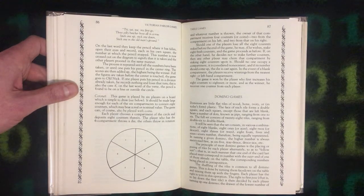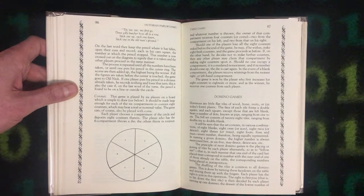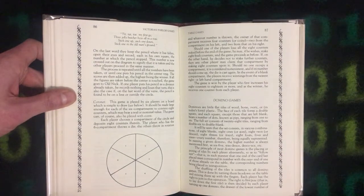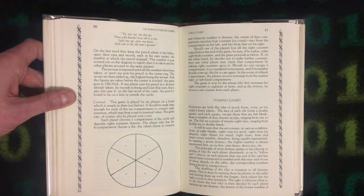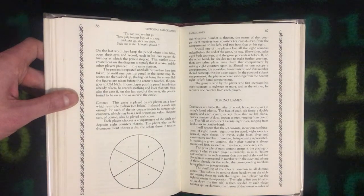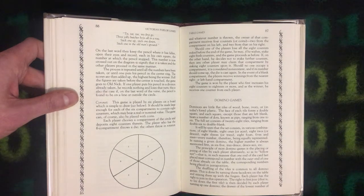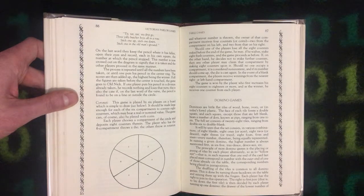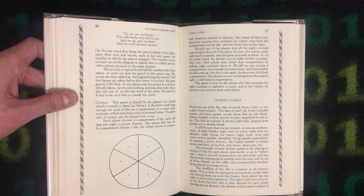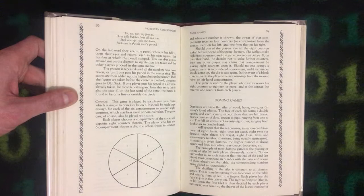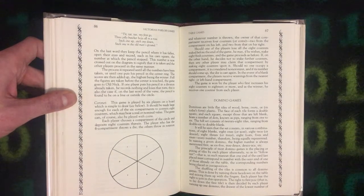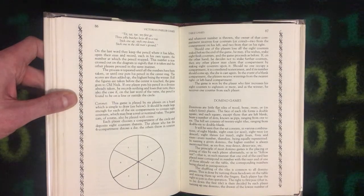The player who has the six compartment throws a die. The others throw in rotation and whatever number is thrown, the owner of that compartment receives four counters or coins, two from the compartment on his left and two from that on his right. Should one of the players lose all the eight counters staked before the end of the game, he may, if he wishes, stake eight fresh counters and the game proceeds as before. If, on the other hand, he decides not to stake further counters, then any other player may claim that compartment by staking eight counters upon it.